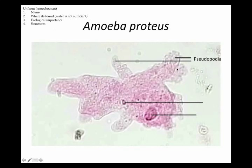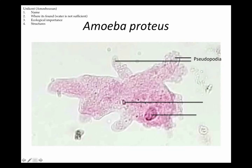The amoeba has pseudopodia — extensions of the plasma membrane that allow it to move and catch food through phagocytosis. It surrounds food with pseudopodia, fuses them together, and engulfs food into a food vacuole, which is then digested by lysosome organelles. The nucleus is the larger dark spot visible in the organism.